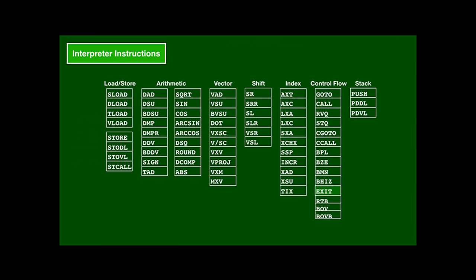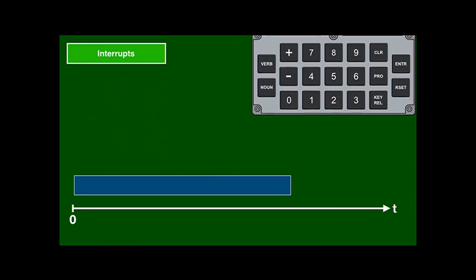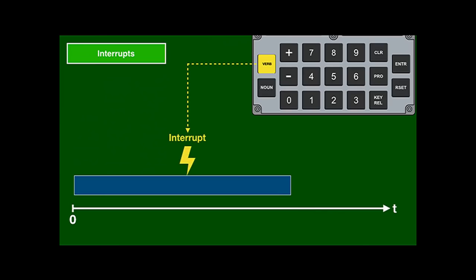Regular machine code and interpretive code can be mixed and matched inside a job. The exit instruction will continue executing regular machine code at the next address, and call-intpret will similarly switch to interpreter mode. In addition to long-running math tasks, the system software also supports device drivers. When a device needs the computer's attention — for example, in case of a DSKY key press — it causes an interrupt. The current job will be interrupted, and the interrupt handler will read the device data and return as quickly as possible. If there's more to do, it can schedule a job for later.